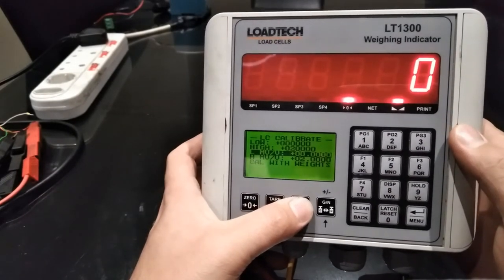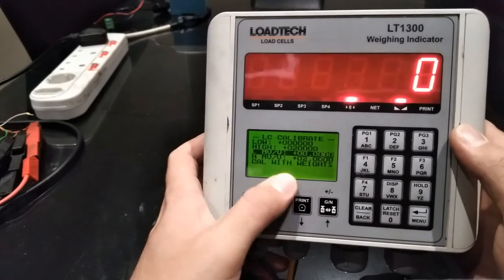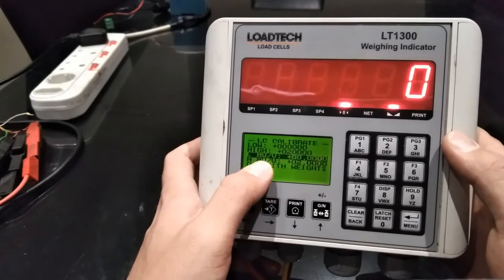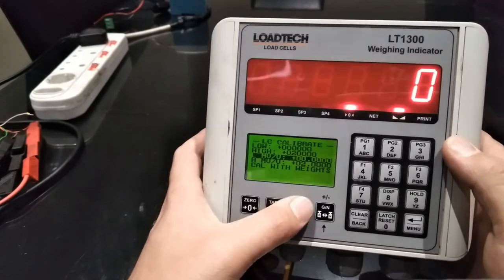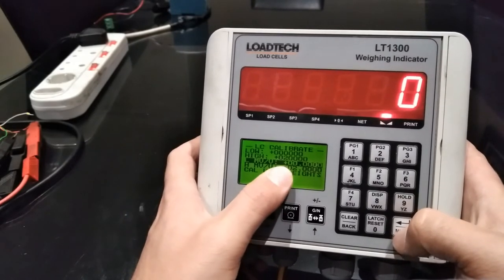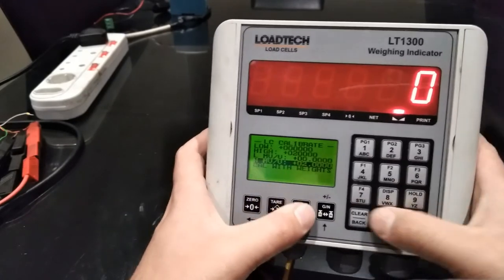First would be with the load cell certificate, which will give you the zero and hundred percent values in millivolt per volt, which you'll input here. Low being zero and high being two millivolt per volt.